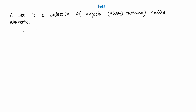For a set, we're just going to call this example set the letter S for set. When we're talking about the numbers in a set, we use these curly brackets. You might see them on your keyboard and on your phones. We need to make sure if we open a set that we close it, and everything inside these curly brackets are the objects or elements of a set. So let's say this set has the numbers 5, 6, 7, and 8.